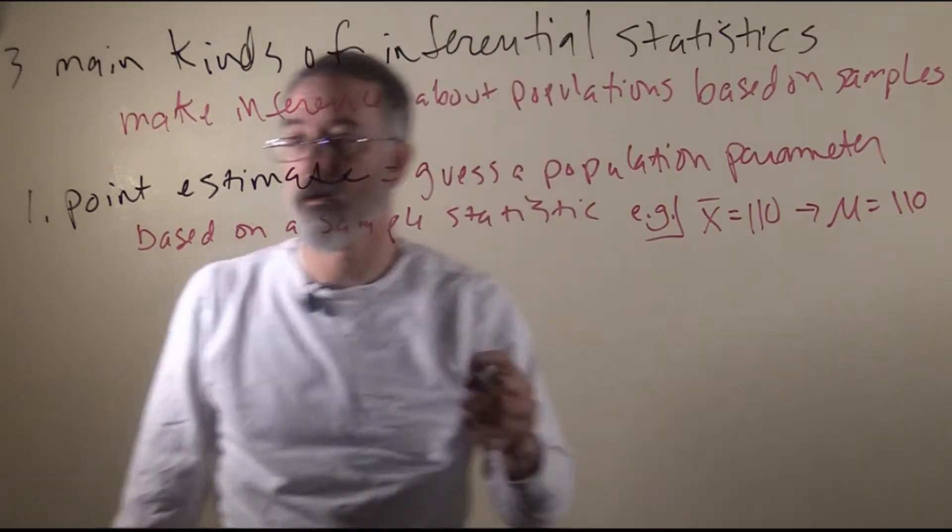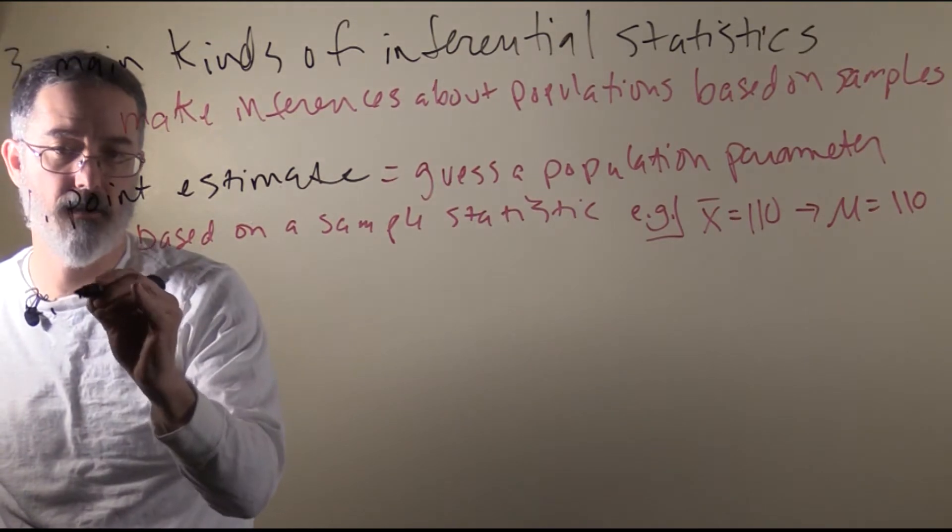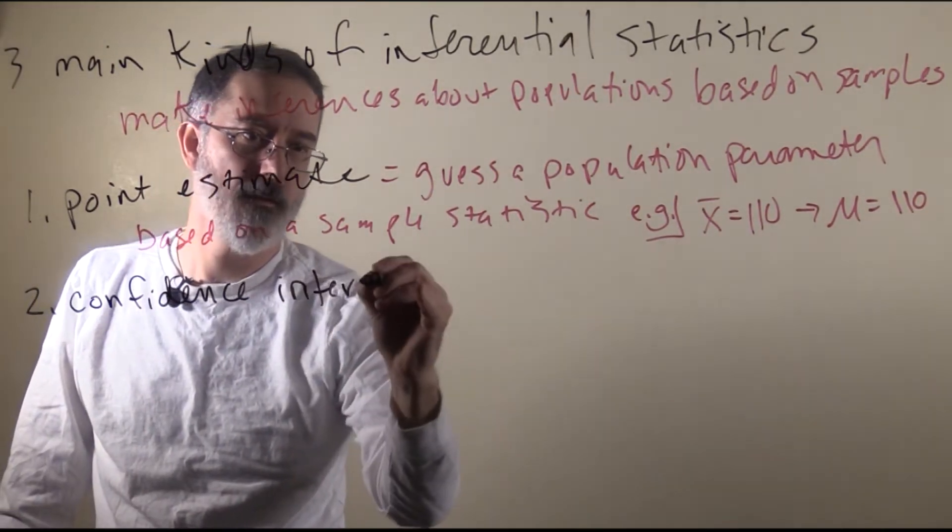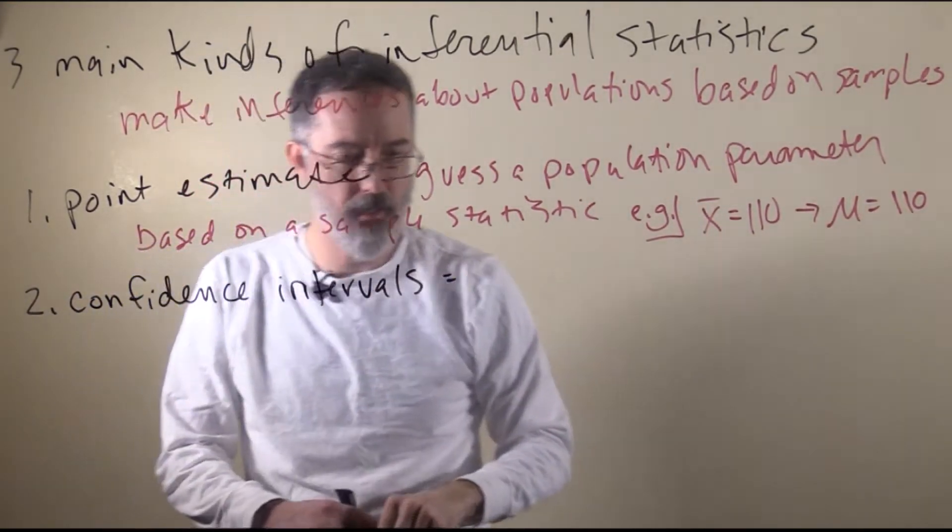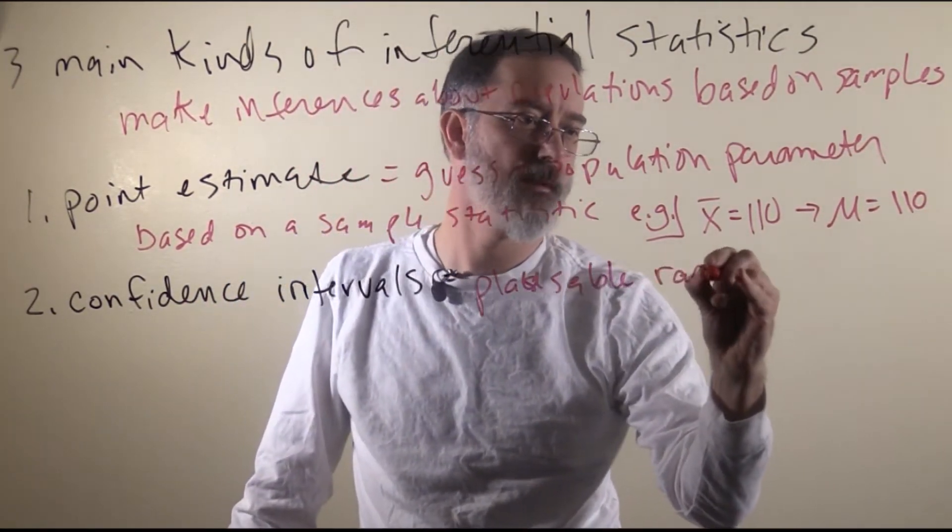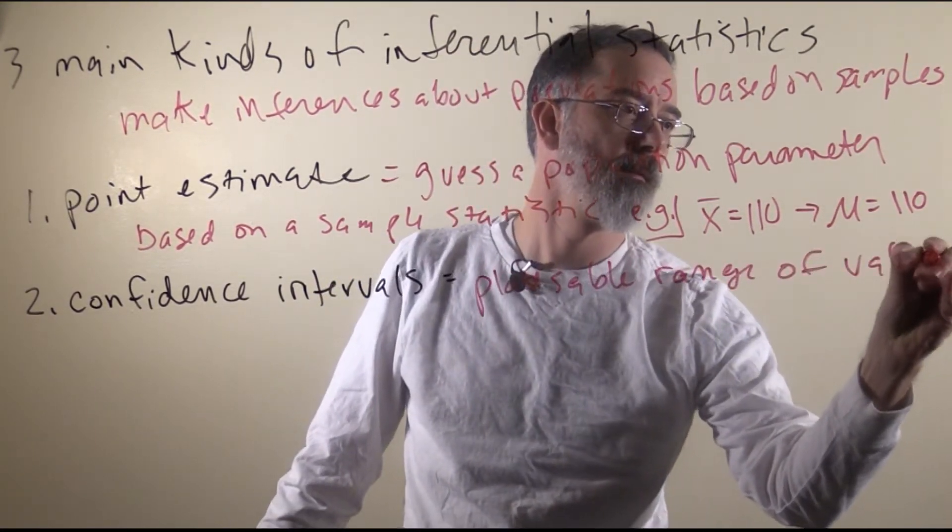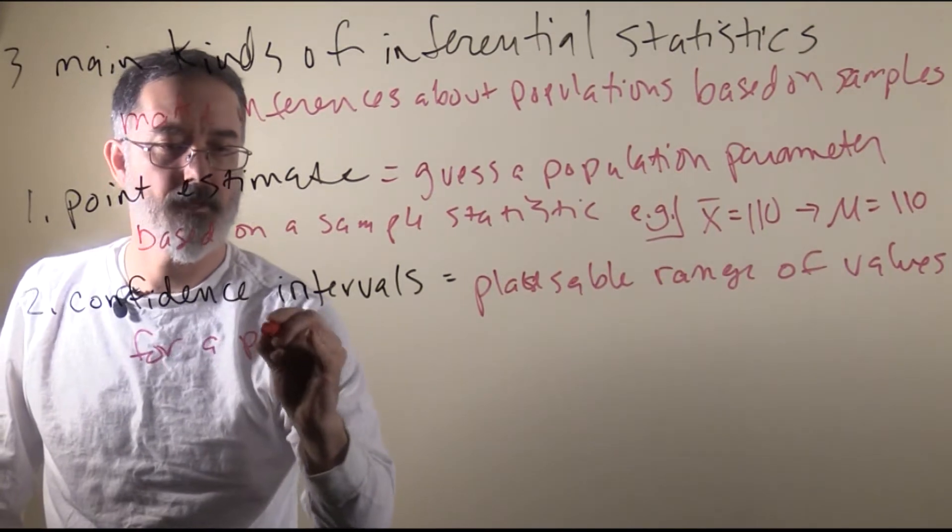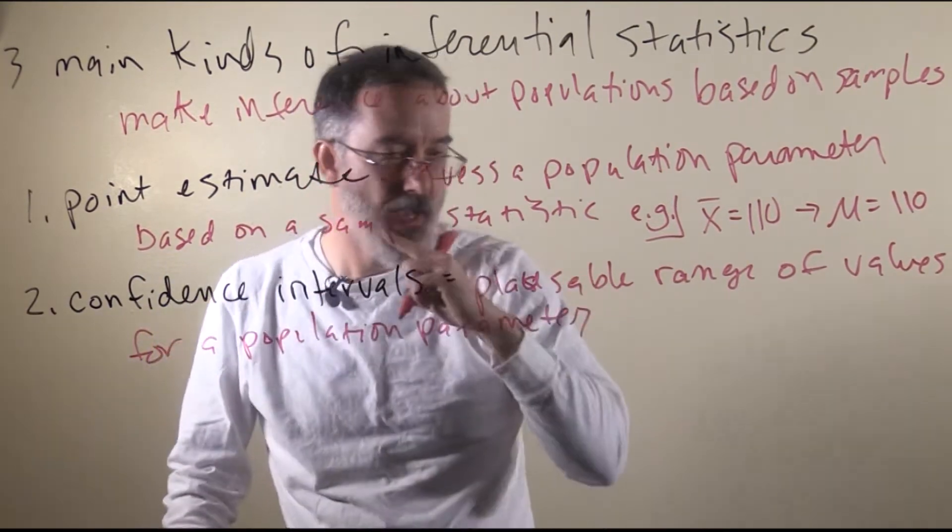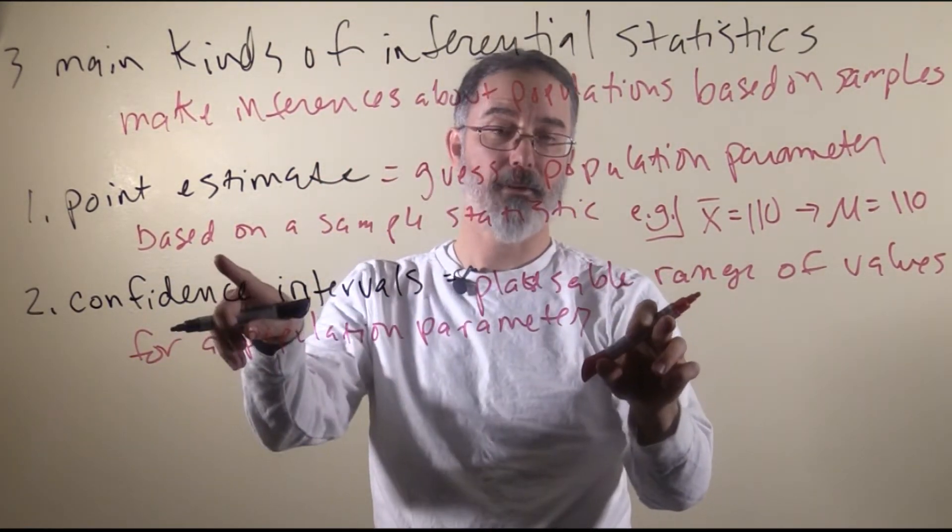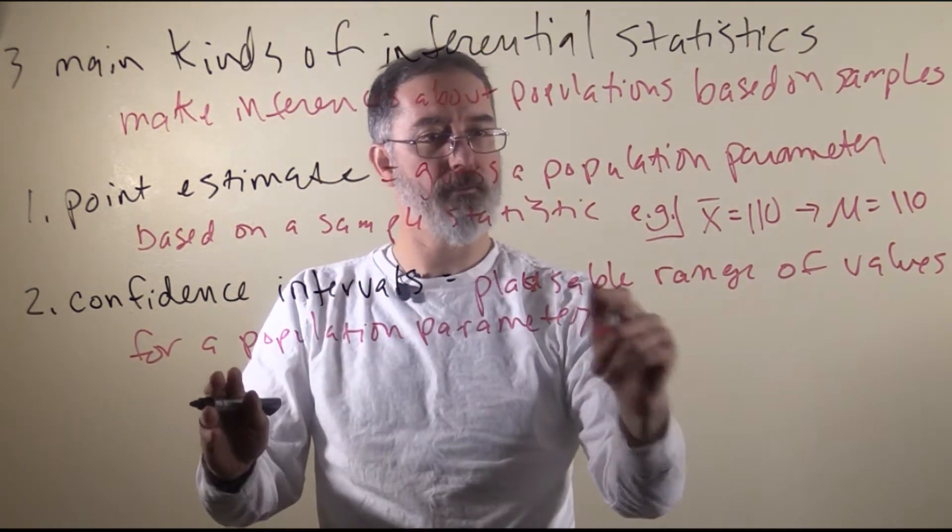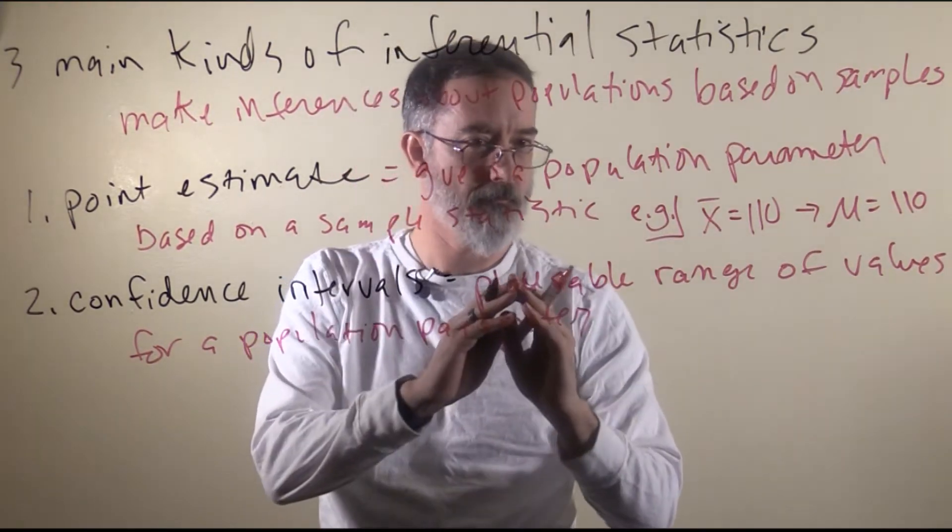The second kind of inferential statistics I want to talk about are called confidence intervals. And these are a plausible range of values for a population parameter. And this is going to be centered around a point estimate. And that range of plausible values is going to be mathematically determined.